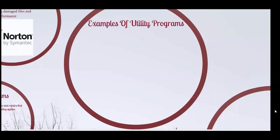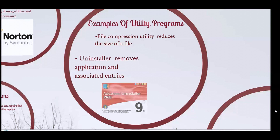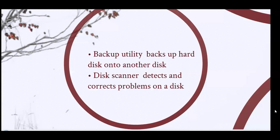Examples of Utility Programs include File Compression Utility, which reduces the size of a file. Uninstaller removes an application as well as any associated entries in the system file. Backup Utility backs up the hard disk onto another disk. A disk scanner detects and corrects problems on a disk.